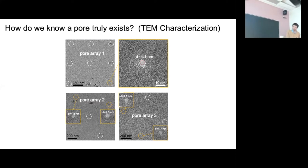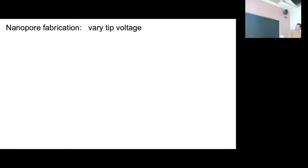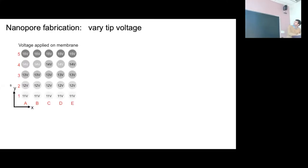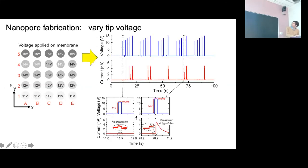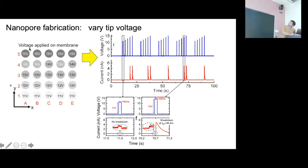Our technique allows us to make an array of pores, which lets us vary the fabrication conditions. For example, this row is at 15 volts, then 14, 13, 12. For each point in the array we can get the actual signatures. This shows the voltage amplitude growing across the array and the actual breakthrough events. Not all voltages lead to a pore forming — only the highest voltages, 15 and 14, do. White indicates a successful pore formation, so there's a voltage threshold for pore formation.